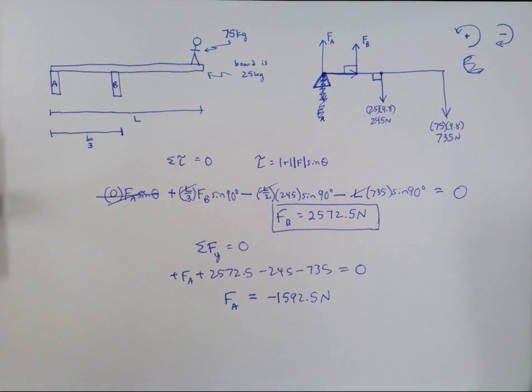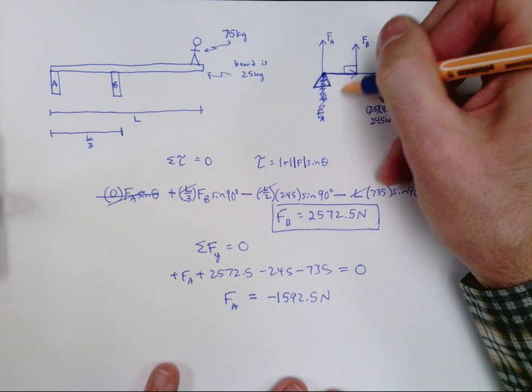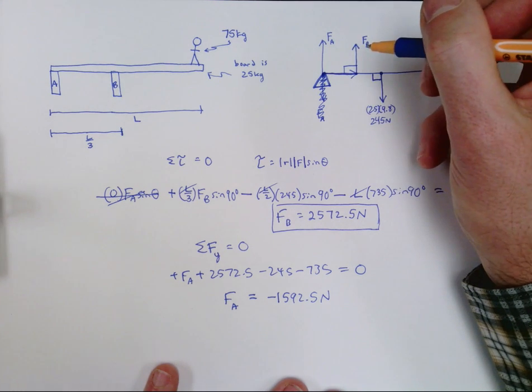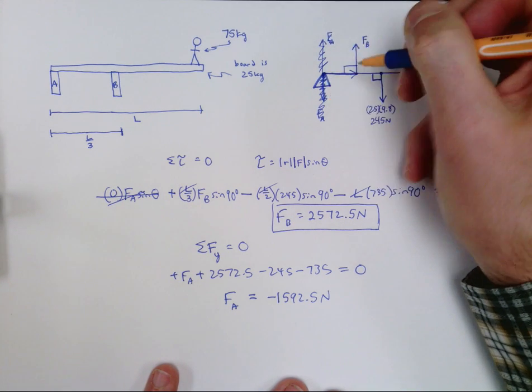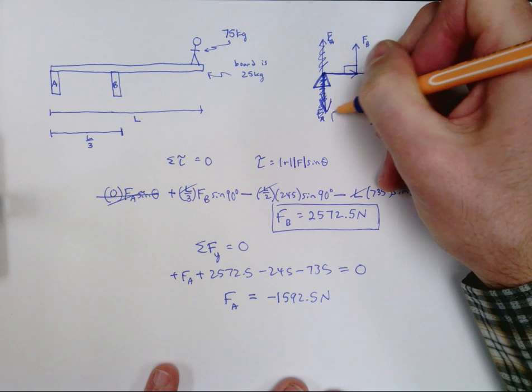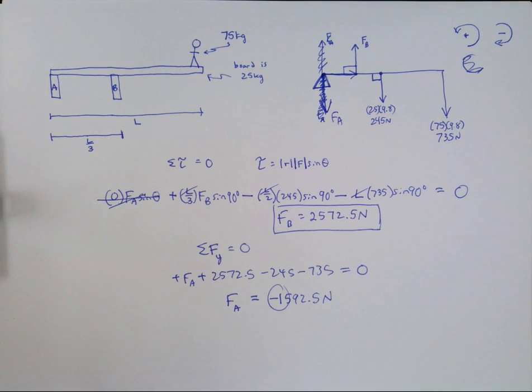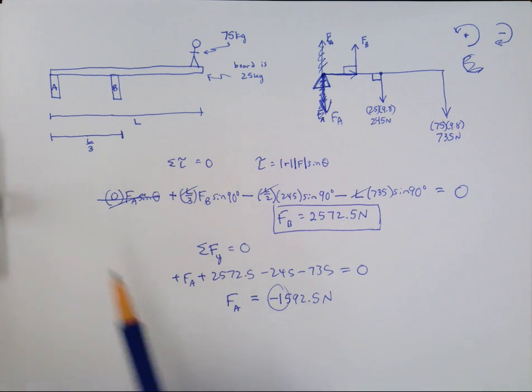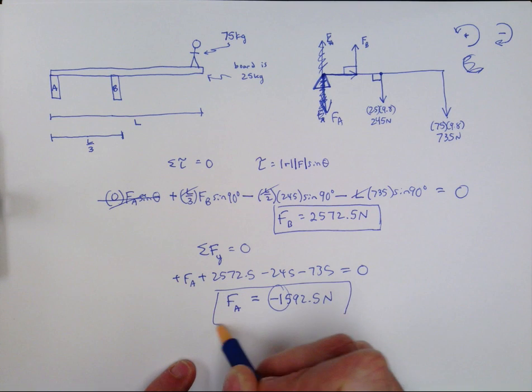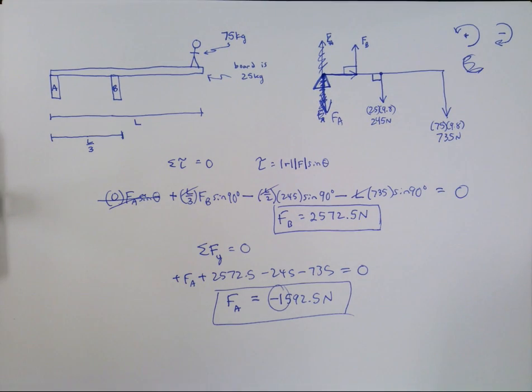So what does the negative answer mean? This is what I was mentioning to you earlier. It's not critical that you pick the correct direction for these unknown forces. Turns out that we chose the wrong direction. As I said earlier, force A really does point downward. How do I know? Because when I said that it pointed upward, I ended up with a negative answer. The negative here means you guessed the wrong direction. So if you ever solve one of these equilibrium problems and you get a negative answer for one of your forces, it means that you guessed the wrong direction and that you should draw it in the opposite direction than you did in your diagram.